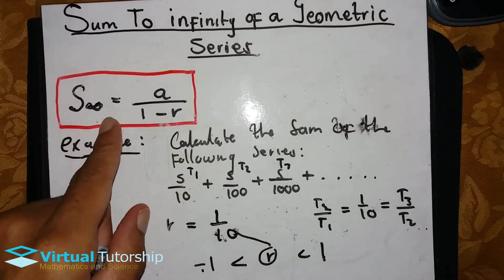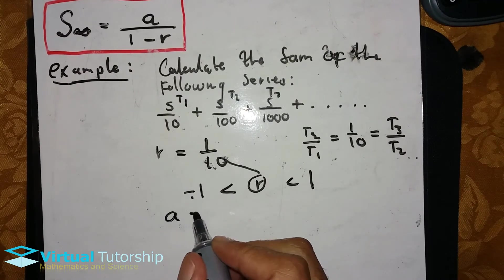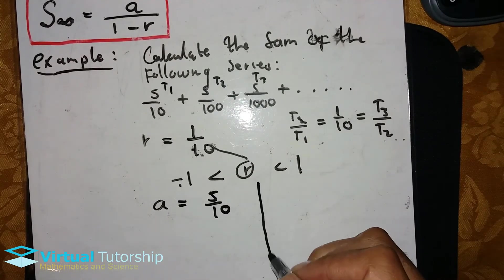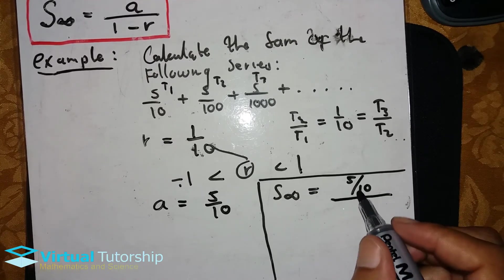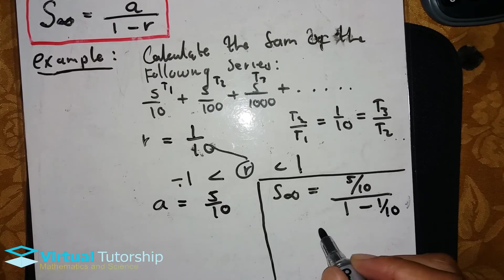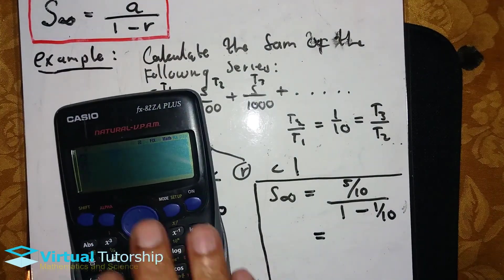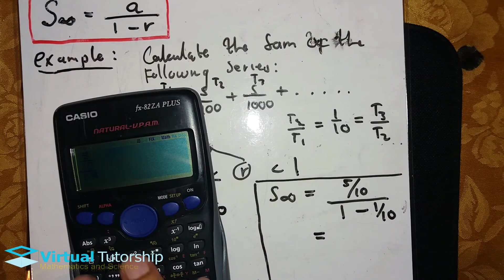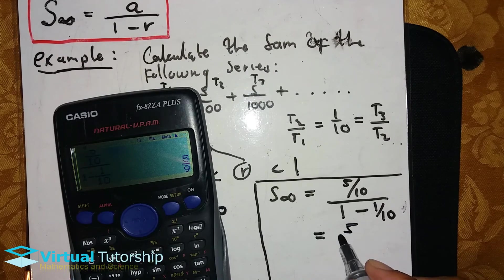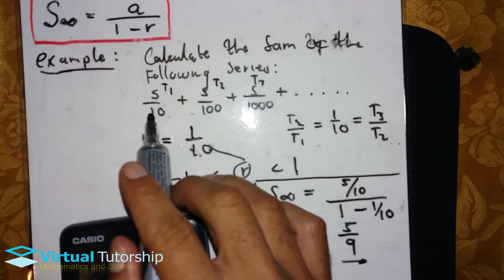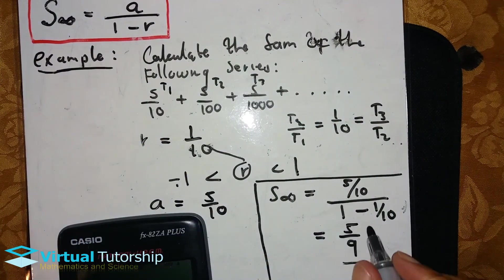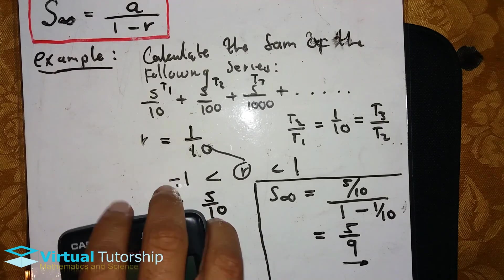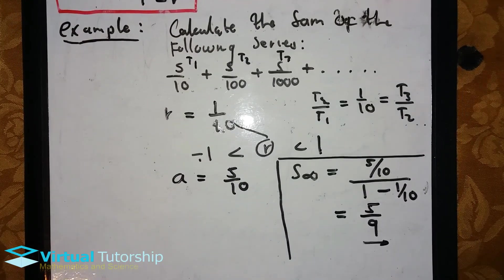1 over 10 is between minus 1 and 1, so r is between minus 1 and 1, meaning this series is convergent. So this formula can apply. The first term 'a' is 5 over 10. Applying the sum to infinity formula: sum to infinity equals a divided by 1 minus r, which is 5 over 10 divided by 1 minus 1 over 10, equal to 5 over 9.